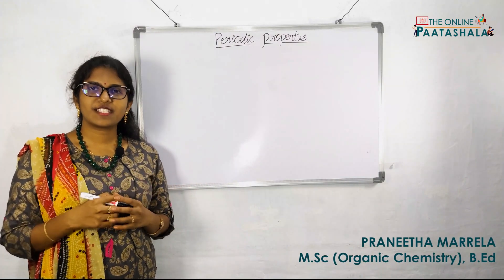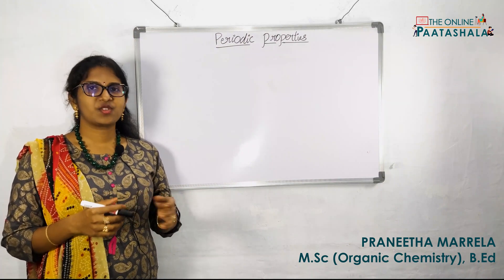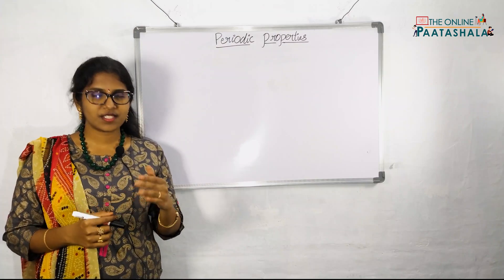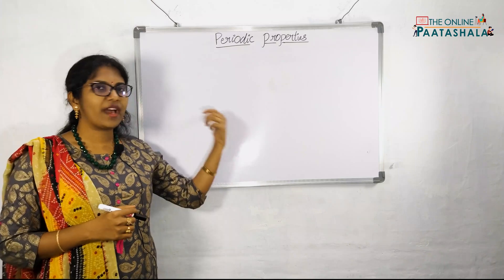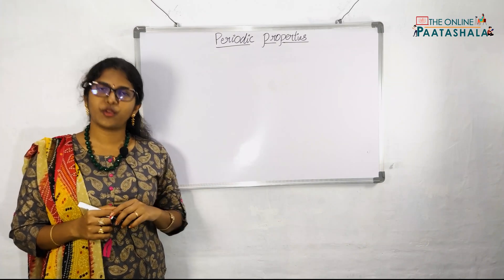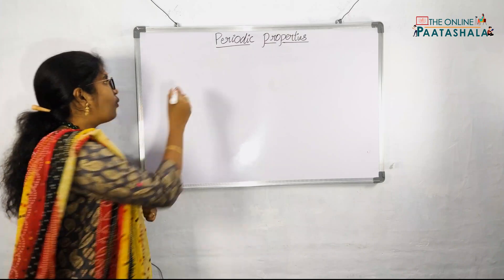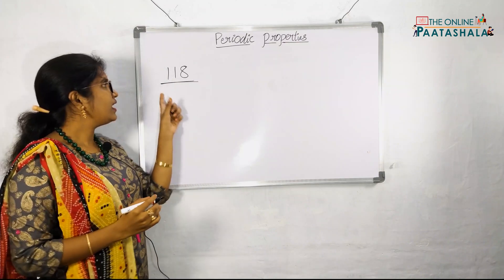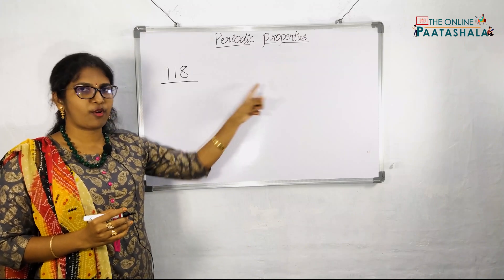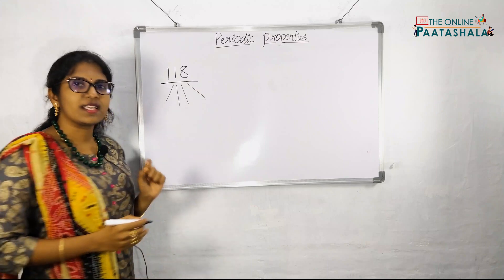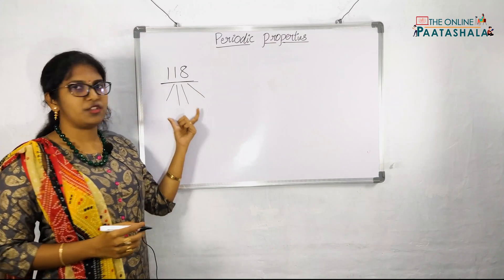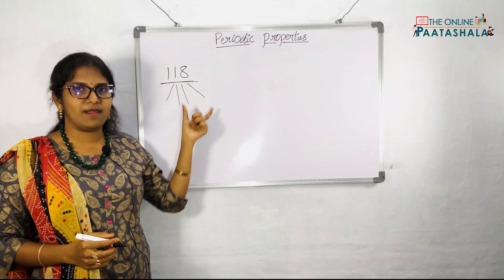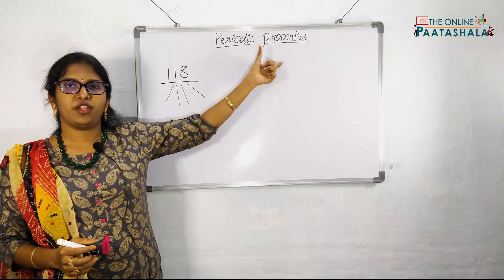Hello everyone, welcome to the first session of the online Patishala. Today we are going to discuss about the topic periodic properties. Before learning periodic properties, we'll go into the introduction and why we need to learn about them. In the periodic table, total 118 elements are present, and each element has its own different properties. Learning all 118 elements individually is very difficult, so we have introduced some properties to make it easy — and we have named these as periodic properties.